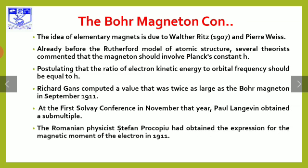The idea of the elementary magnet was proposed around 1907. The idea of the model of atomic structure has several theoretical commitments. The concept of the magnetron involves the orbital frequency of the electron, which should be equal to h.